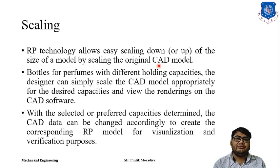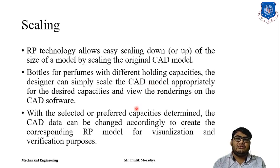For example, if bottles of perfume with different capacities are to be manufactured, the designer does not need to design all the bottles separately. He can design one bottle and for different holding capacities, appropriately scale down or scale up the model. He can view these models in CAD software or print 3D models using Rapid Prototyping techniques and have prototypes of different capacities. Then he can select the preferred capacities and create CAD models for visualization and verification.